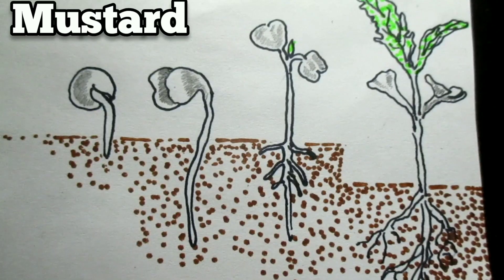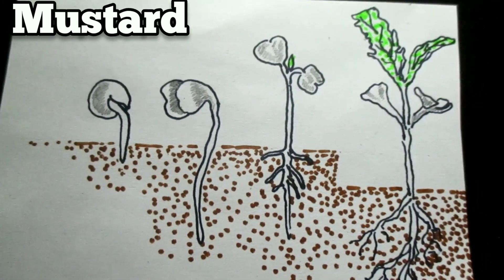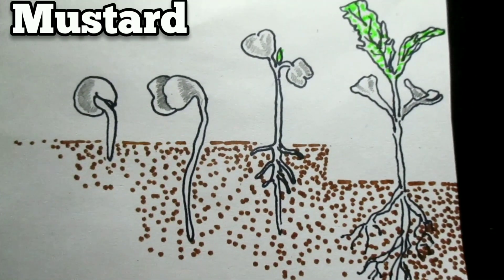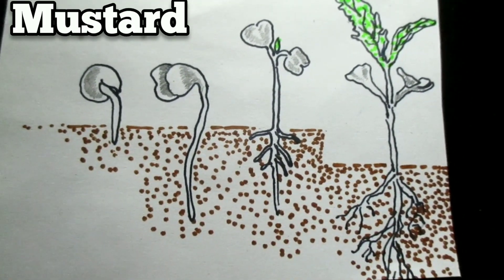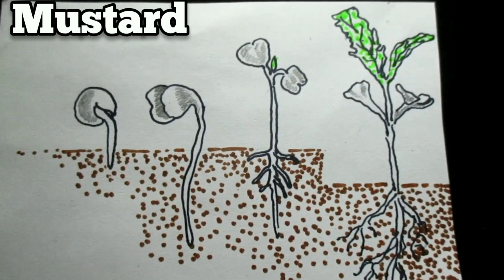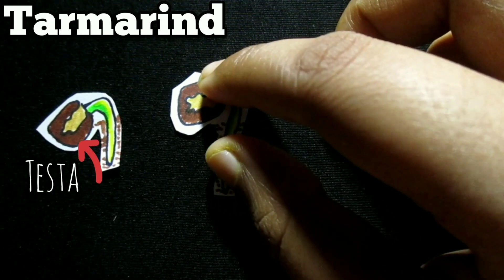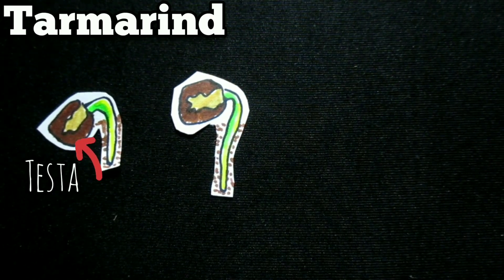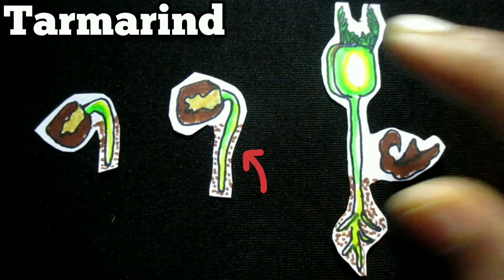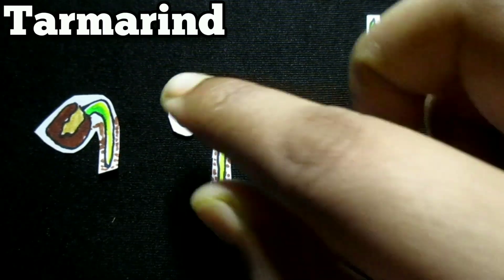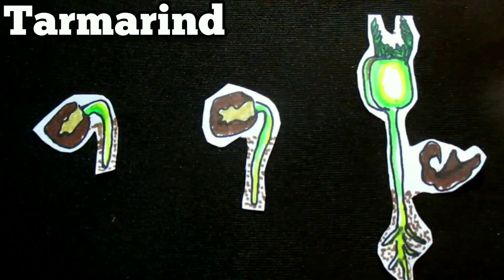In the case of mustard, the seed coat is thinner, the two cotyledons are much oilier, and the radicle is curved in the tiny seed. The stages of germination are essentially the same as in Cucurbita. In tamarind, the testa in this case is very hard. Nevertheless, the radicle comes out first after the testa is burst and fixes the seed by forming a root system. The hypocotyl now grows fast and soon pulls out the two large and thick cotyledons. The plumule then grows out into the aerial shoot.